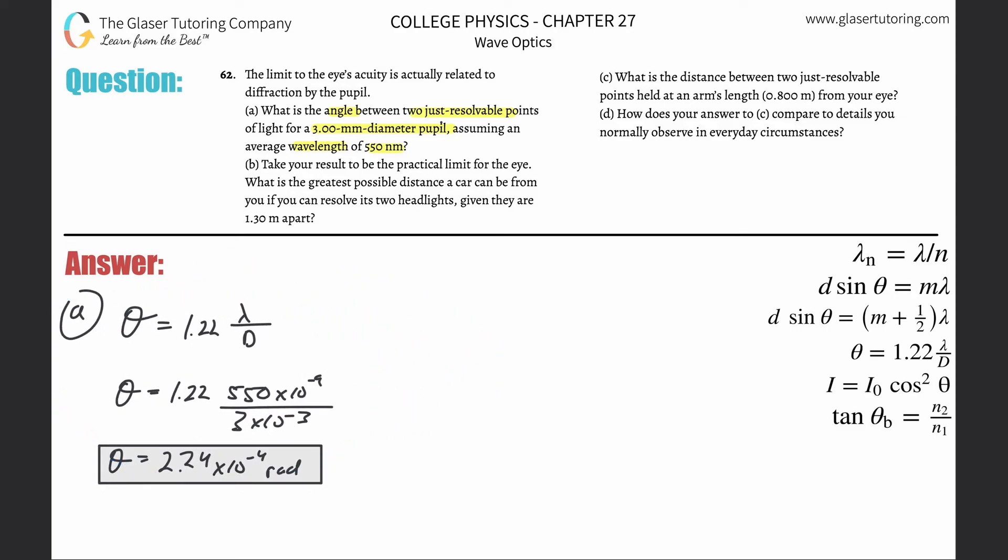Now letter B. We'll change the color. Get a little happy blue. Take your results to the practical limit for the eye. What is the greatest possible distance a car can be from you if you can resolve its two headlights, given they are 1.3 meters apart? So basically right here, we'll pretend that this right here is your pupil and you have two headlights, maybe one here. And here's the car, right? It's some distance away.